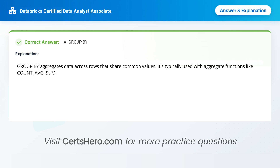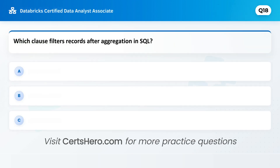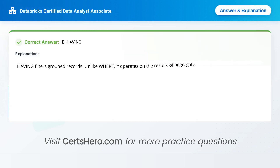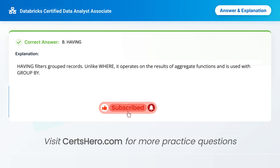Which clause filters records after aggregation in SQL? A. Where. B. Having. C. Order by. Correct answer is B: Having. HAVING filters grouped records. Unlike WHERE, it operates on the results of aggregate functions and is used with GROUP BY.